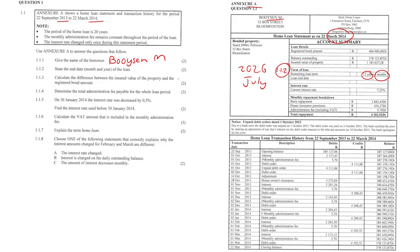Question 1.1.3: Calculate the difference between the insured value of the property and the registered bond amount. The insured value is R1,185,000 minus the registered bond amount of R466,000, giving a difference of R719,627.28.